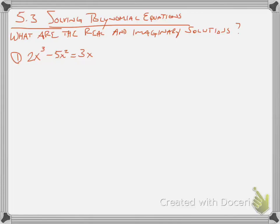We're still going with polynomial equations now, and this is solving. Solving equations — finding the solutions — is the same as finding the zeros or the roots. But because it's an equation, not a function, there could be variables on either side. So the first step, just like it always has been when we're solving, is get everything on one side.